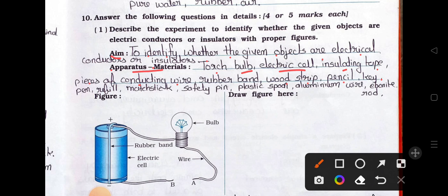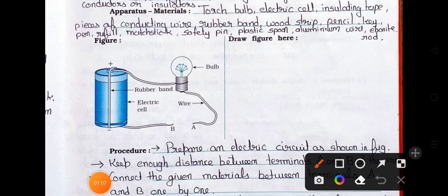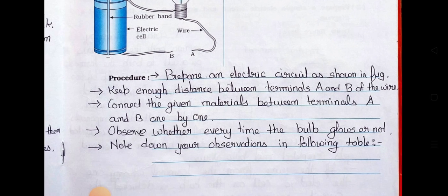Additional materials: pencil, key, pen refill, matchstick, safety pin, plastic spoon, aluminium wire, and ebonite rod. See the figure — here the electric cell is there with its positive terminal and negative terminal. A rubber band is connected with a wire, and here the torch bulb is connected in the circuit.